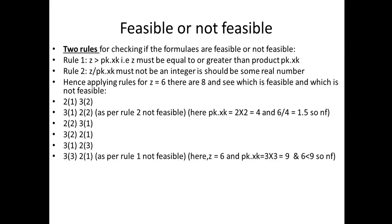All the three are feasible, now this is not feasible, 3(3) 2(1). As per rule 1, Z ≥ PK×XK. You can see Z is 6, but PK×XK is 3×3 = 9. So Z is not greater than PK×XK, so this is not feasible. Similarly, here also 3(3), 3s are 9, so this is also not feasible.